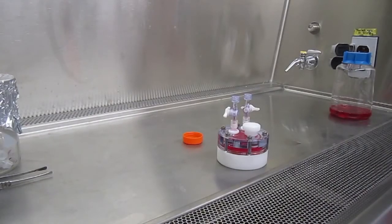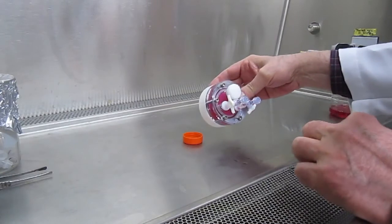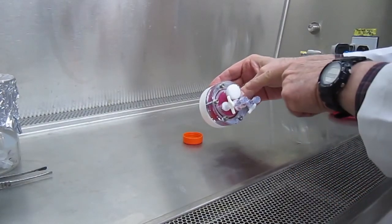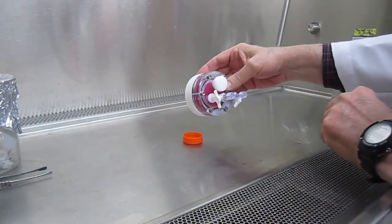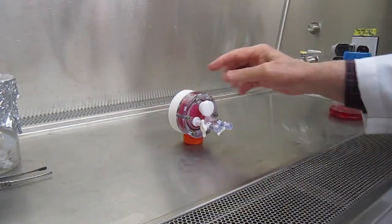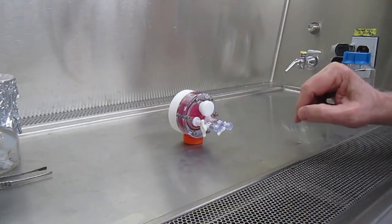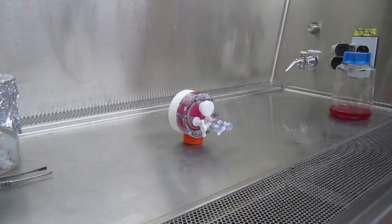There's a different procedure for changing the media in the HARV vessel. In this case, you tip the HARV on its side so that the large fill port is facing upwards and allow it to sit and the cells will sediment to the bottom on the opposite side of the fill port. This could take three to five minutes.